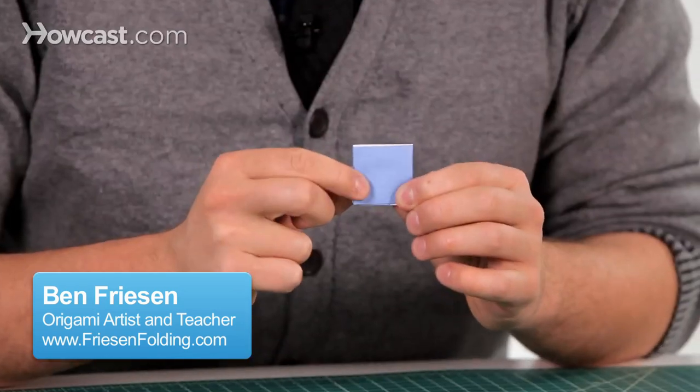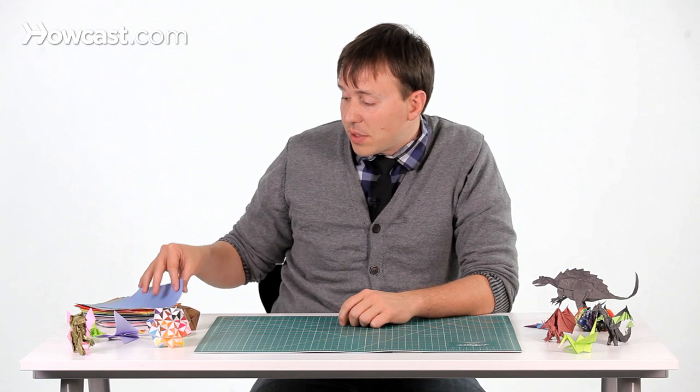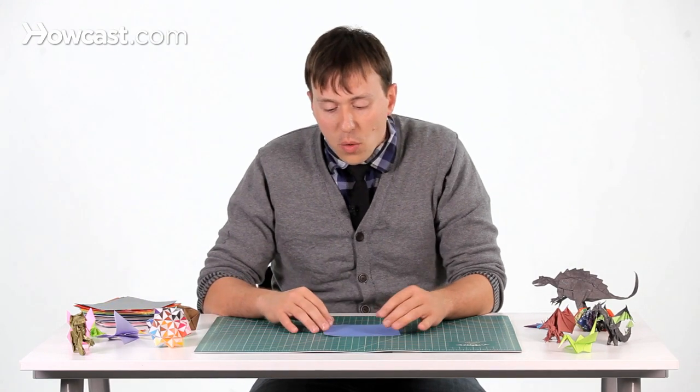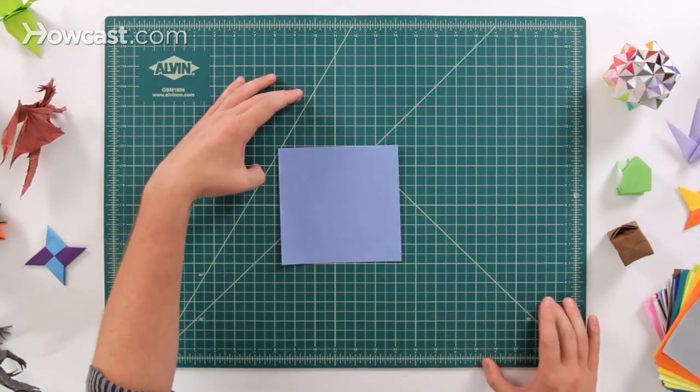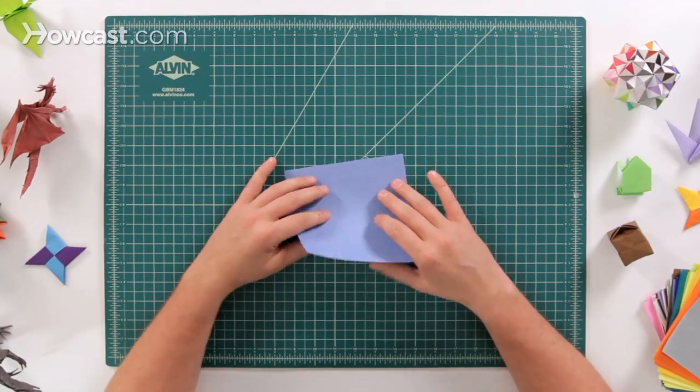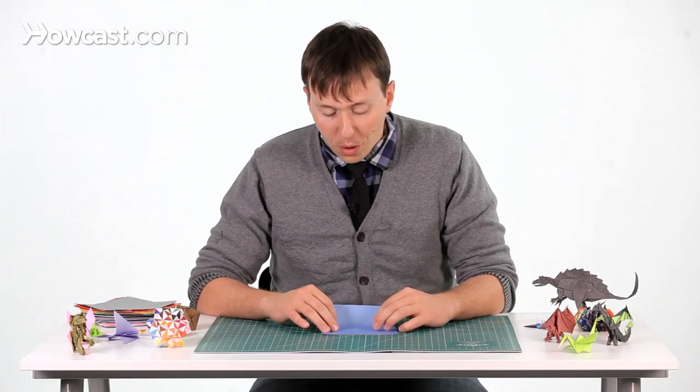These are the instructions for an origami wallet. So for this origami wallet, I'm going to use six inch paper, but if you want one that's more life size, you might want to use 12 or even a little bit larger. This will be a smaller version of the wallet.